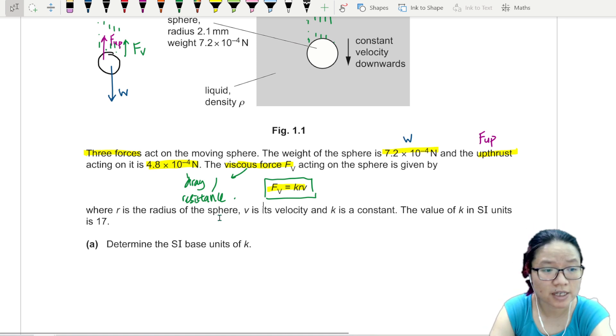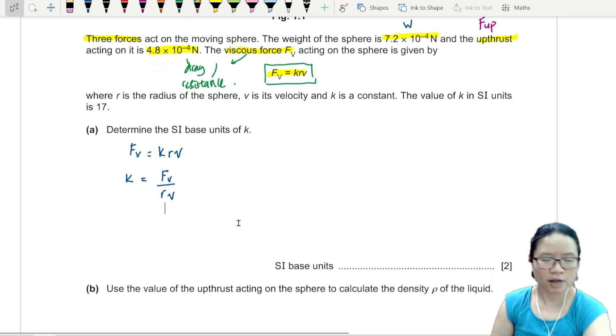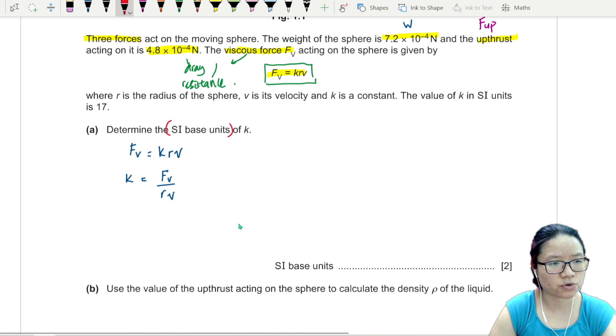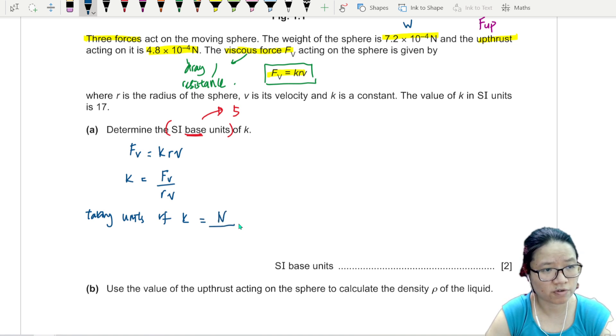Part A, determine the SI base units of K. If you want to find the SI base unit of K, I would suggest to rearrange the physical quantities. So FV equals Krv. I'm going to rearrange this, so K will be equal to FV over rv. When we think about SI base units, there are only that few - kilogram, meter, second, ampere, and Kelvin.